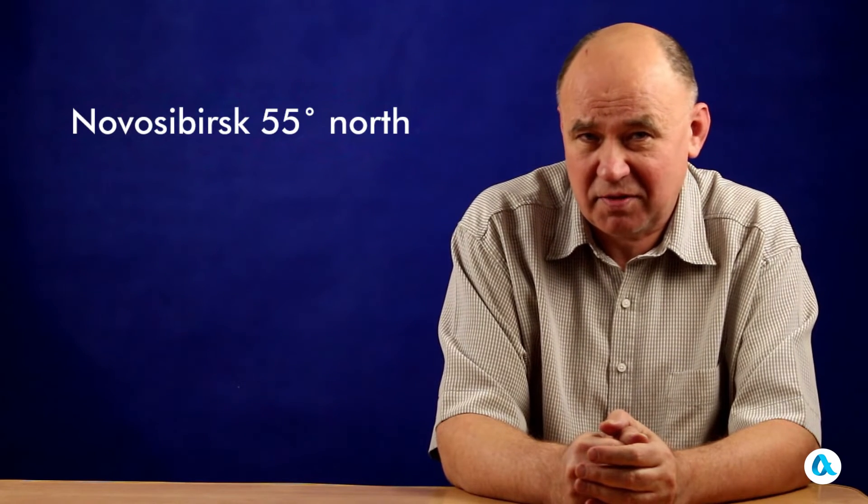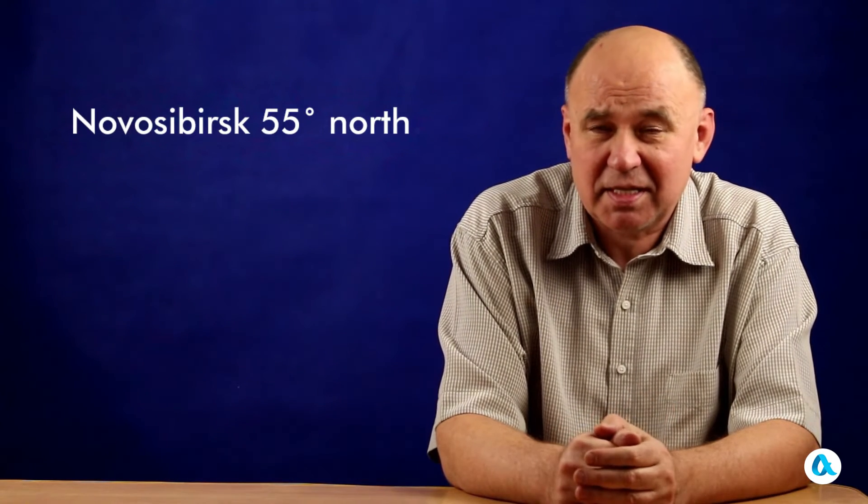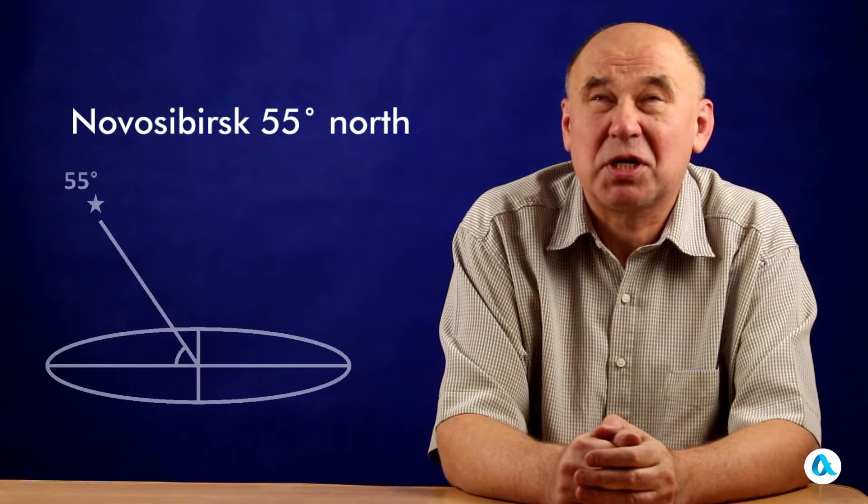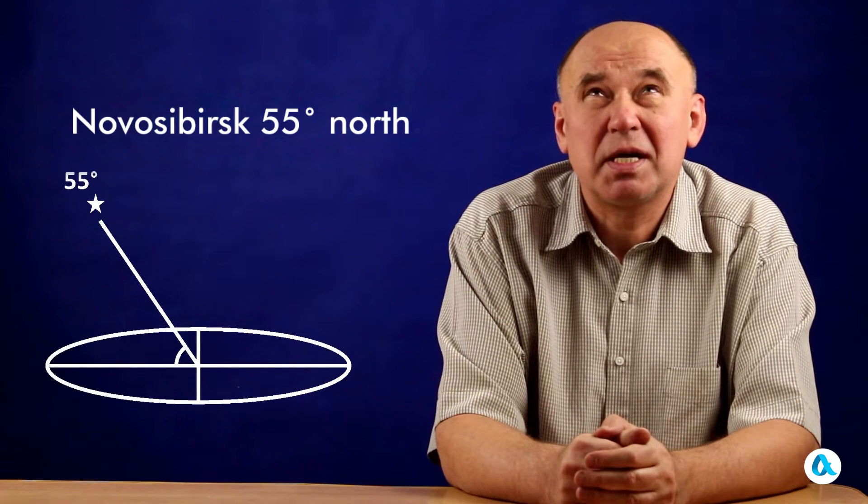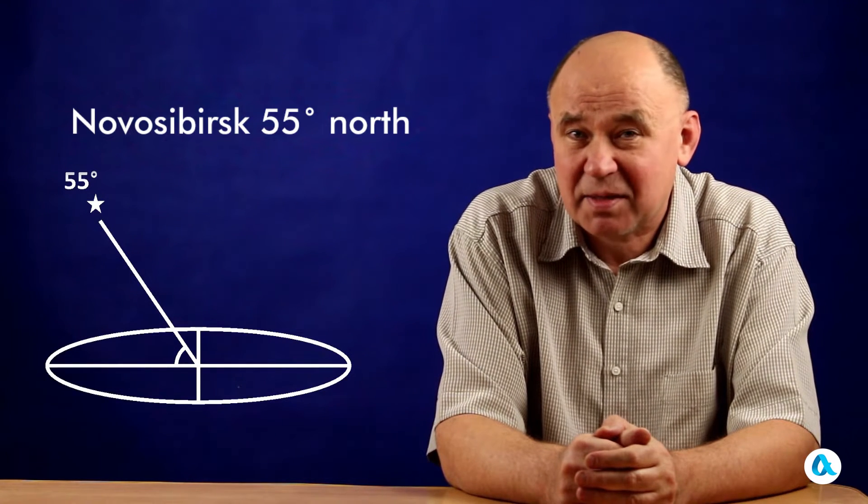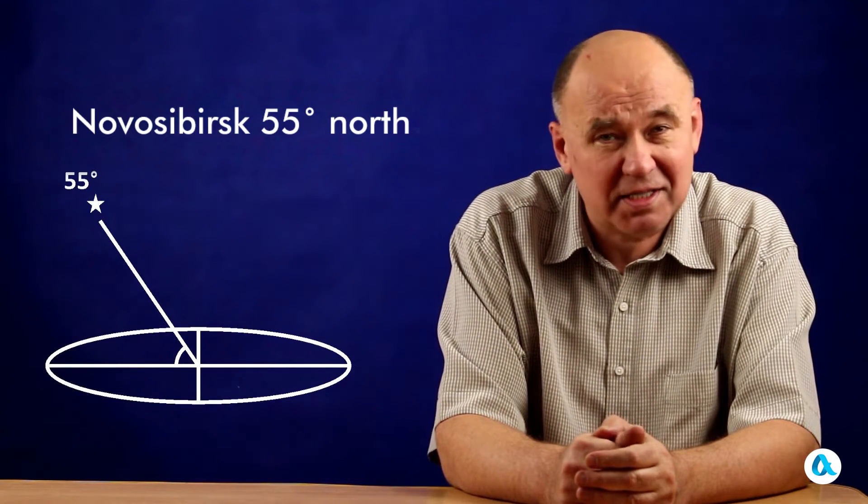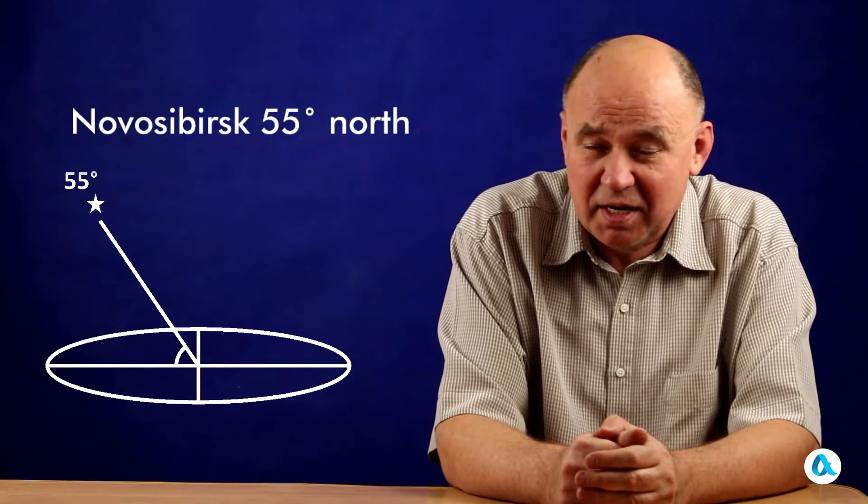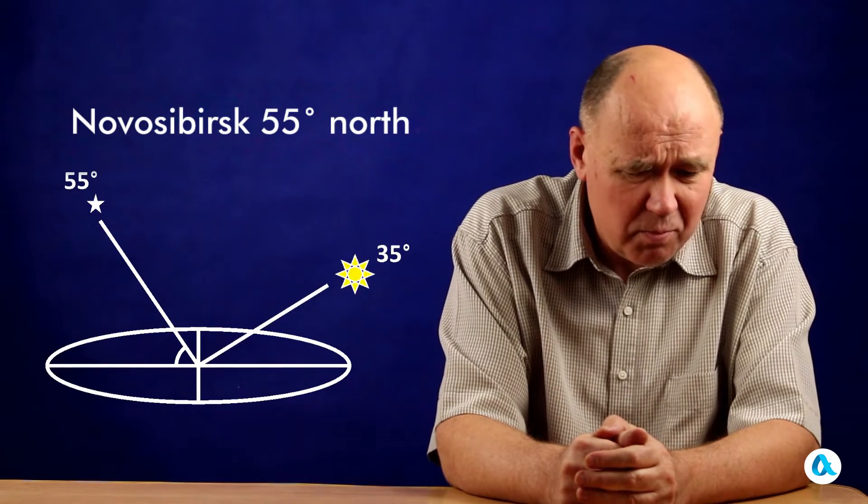Let's consider Novosibirsk as an example. Our city is situated at a latitude of approximately 55 degrees. This signifies that the polar star is positioned at an elevation of 55 degrees above the horizon, indicating its prominent position in the night sky.